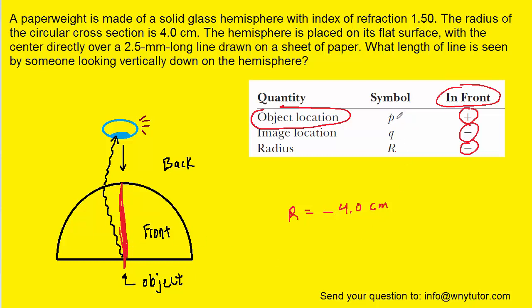According to our sign convention, we're going to call that object distance a positive value. So we can safely say that p is equal to positive 4.0 centimeters.